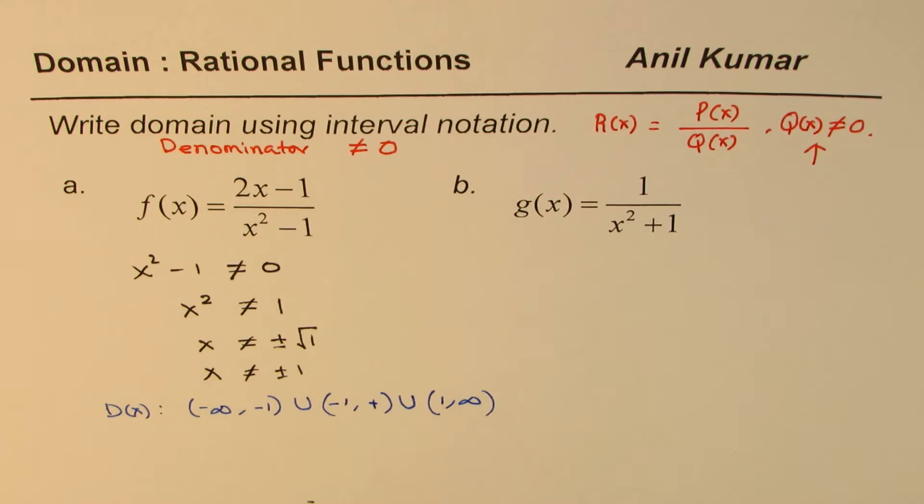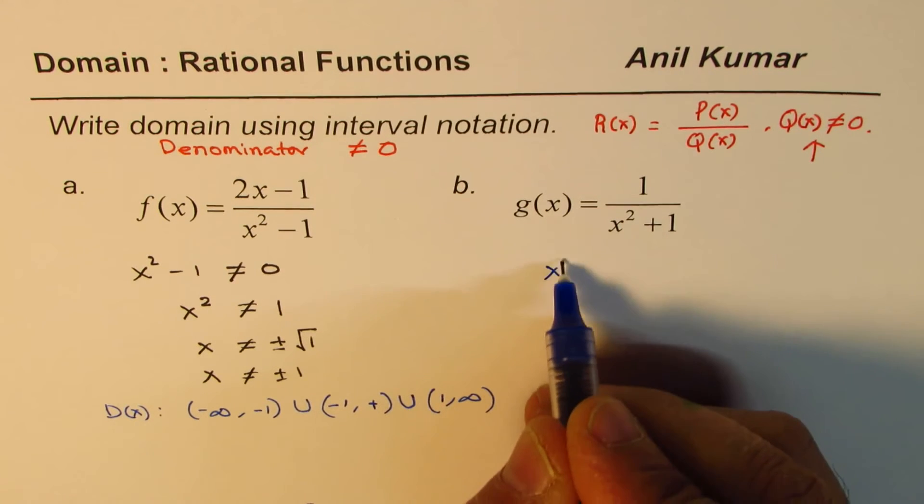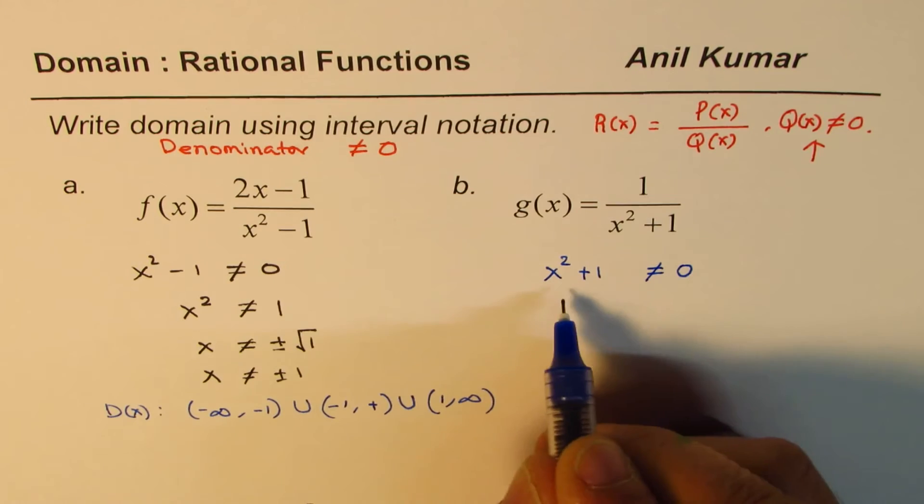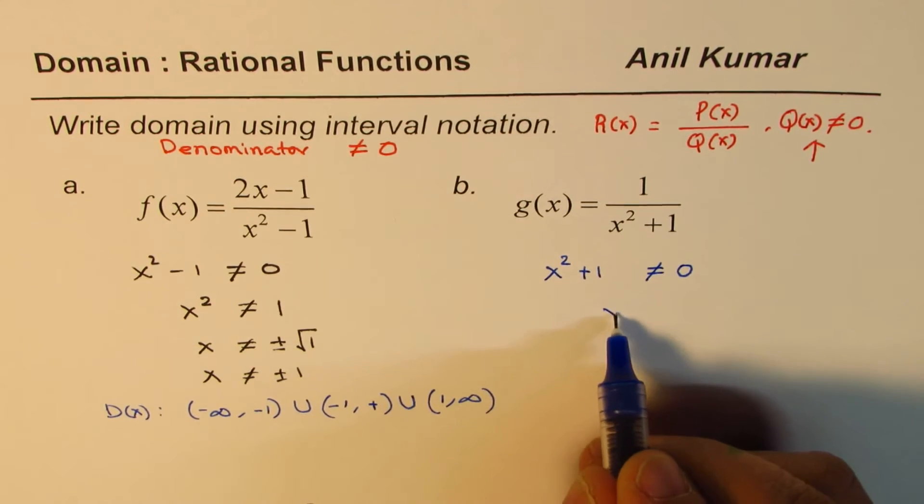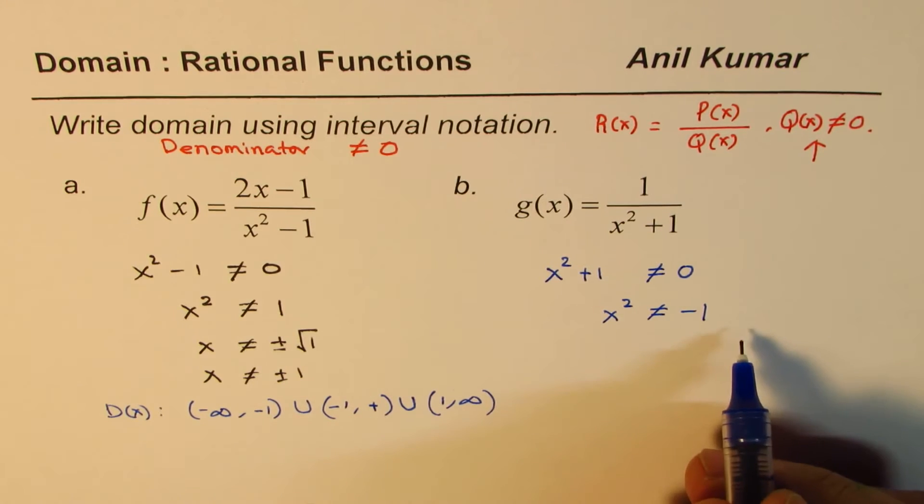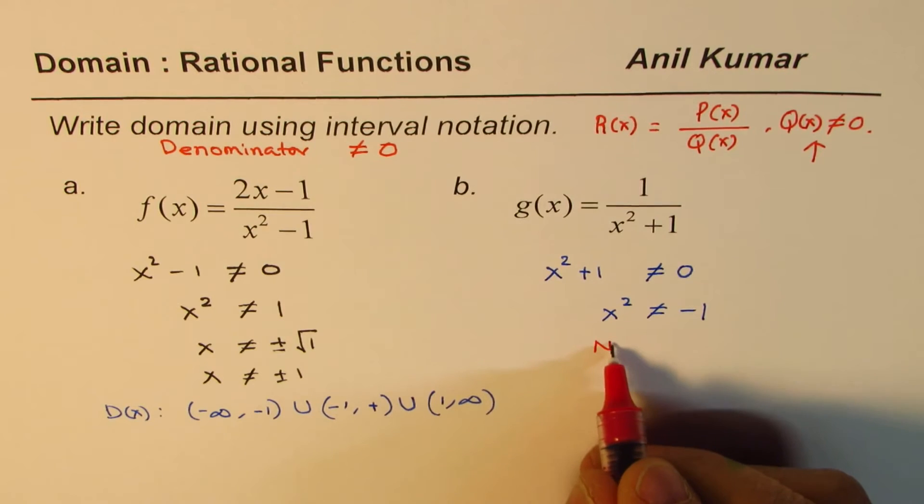Next one is very interesting. Most of the time, when we talk about rational functions, we are always talking about restrictions. Now let's look into this one. So we have x square plus 1, that should not be equal to 0. That is the only restriction here. So that is to say, x square is not equal to negative 1. And you know, x square is always positive. So in this particular case, we have no restrictions.